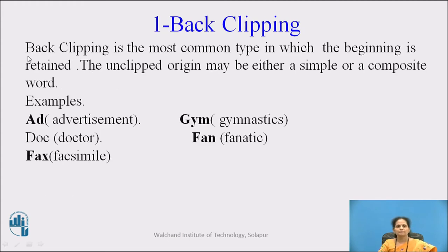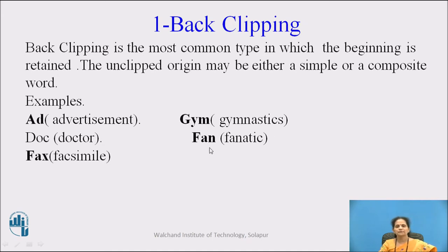The first one is back clipping. Back clipping is the most common type in which the beginning is retained. The unclipped origin may be either a simple or a composite word. Examples: 'ad' from 'advertisement', 'doc' from 'doctor', 'fax' from 'facsimile', 'gym' from 'gymnastics', and 'fan' from 'fanatic'. In this type, the beginning is retained as it is and whatever the remaining part is, it is deleted.